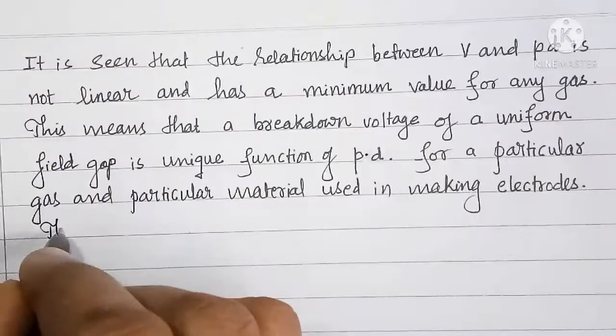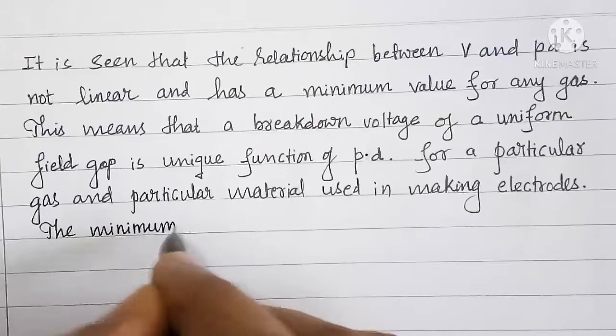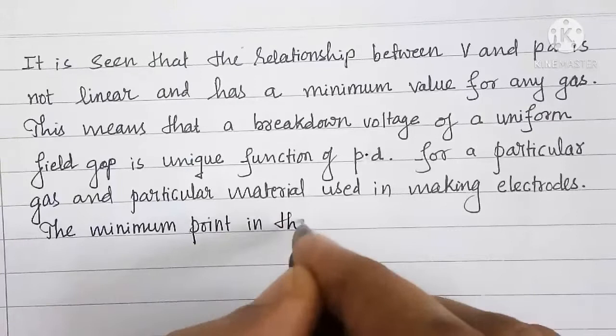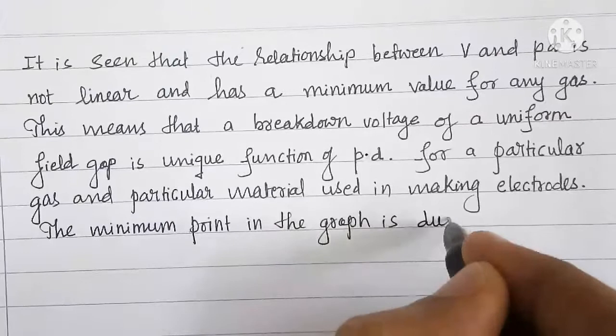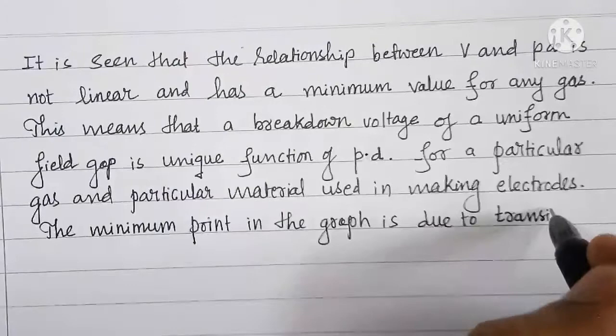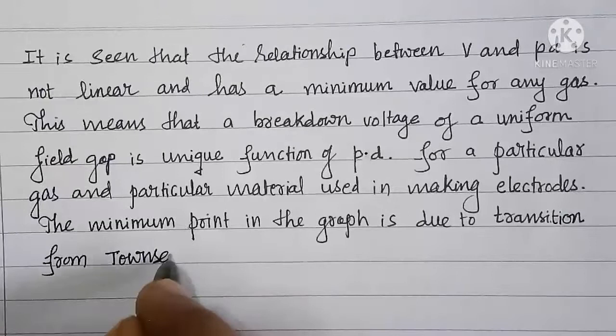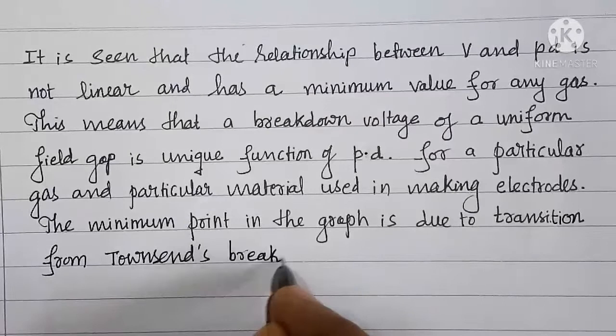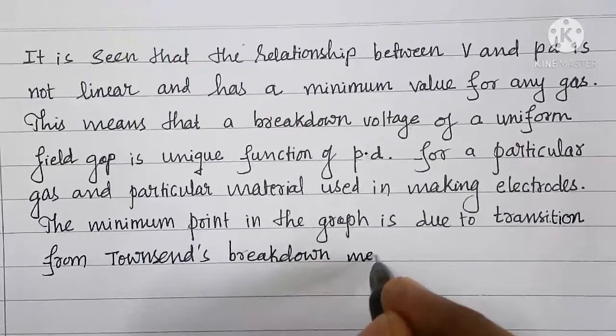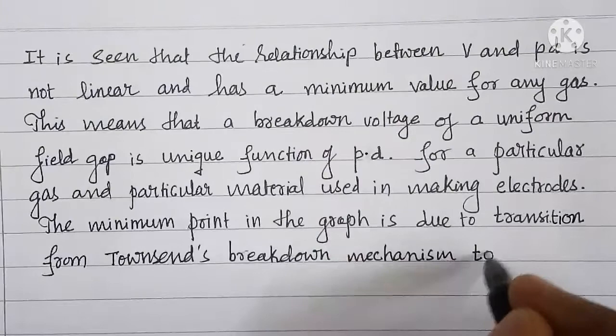The minimum point in the graph is due to transition from Townsend's breakdown mechanism to streamer mechanism.